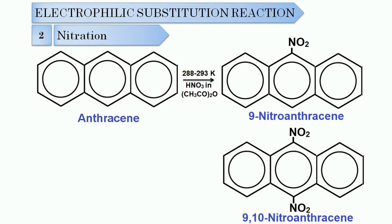The second reaction is nitration. When anthracene is treated with concentrated nitric acid in the presence of a mixture with acetic anhydride, two products will be formed. The first one is nitroanthracene and the second one is 9,10-anthracenedione. So here again two possibilities: in the first case, nitration will occur only at position number 9; and in the second case, nitration will occur simultaneously at position number 9 and 10, giving these two products.